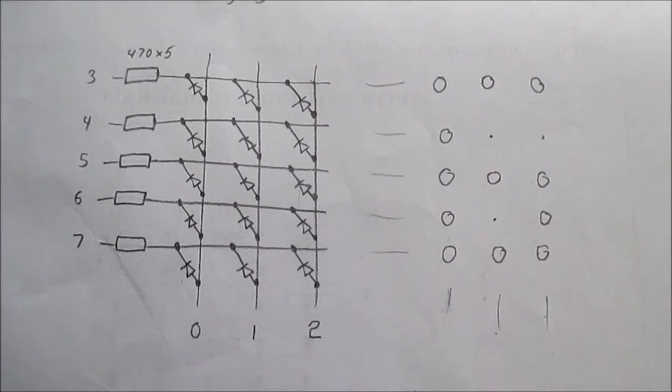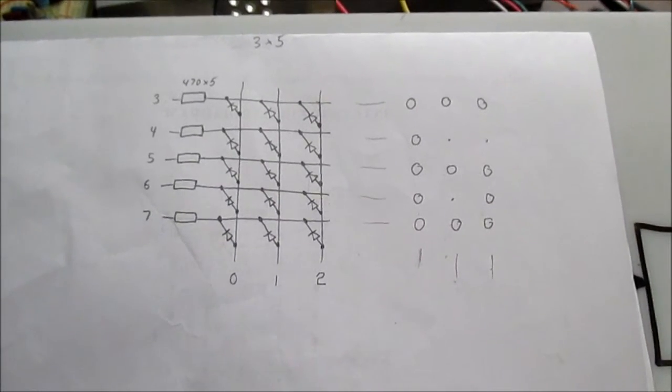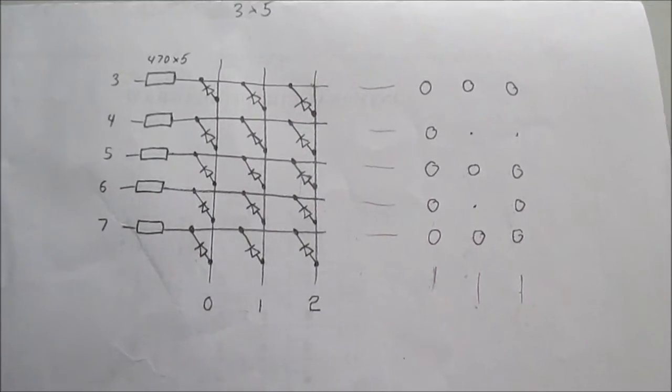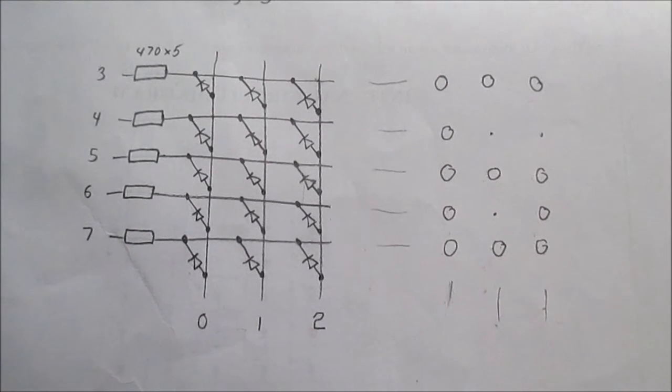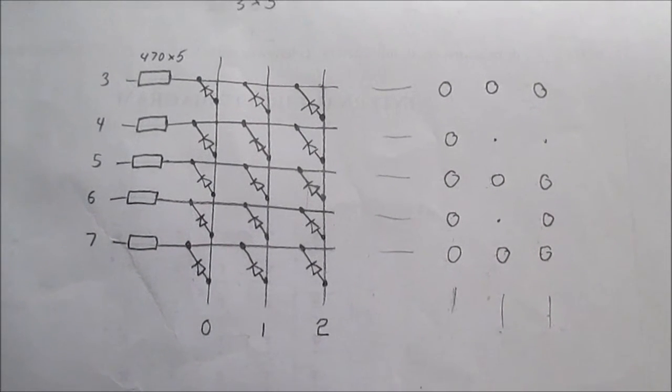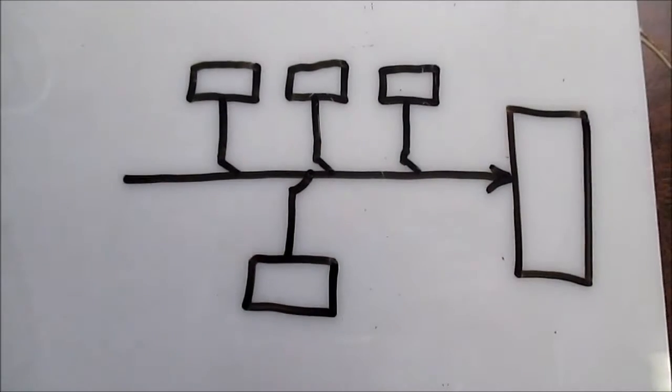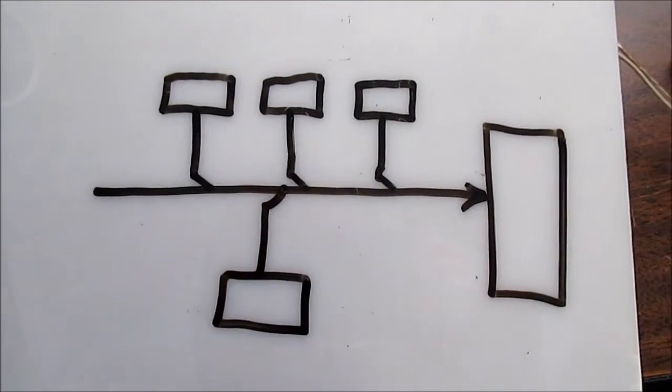However, charlieplexing comes at a cost. The wiring is much more complicated, and you need something called tri-state logic. So what is tri-state logic?